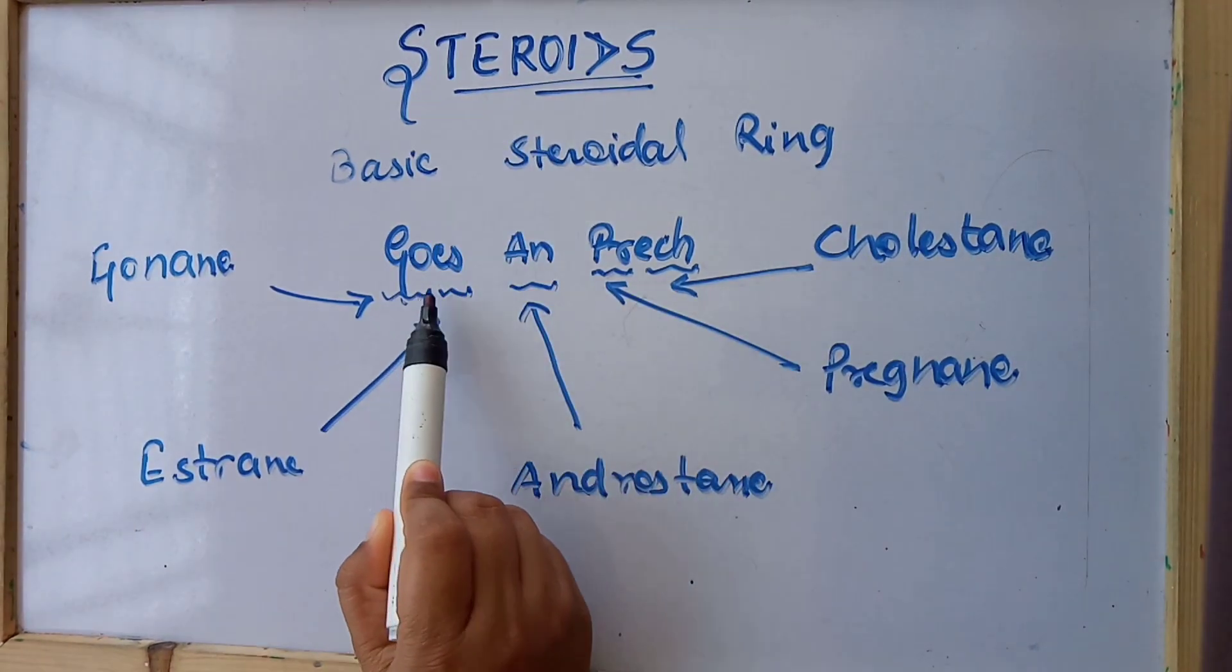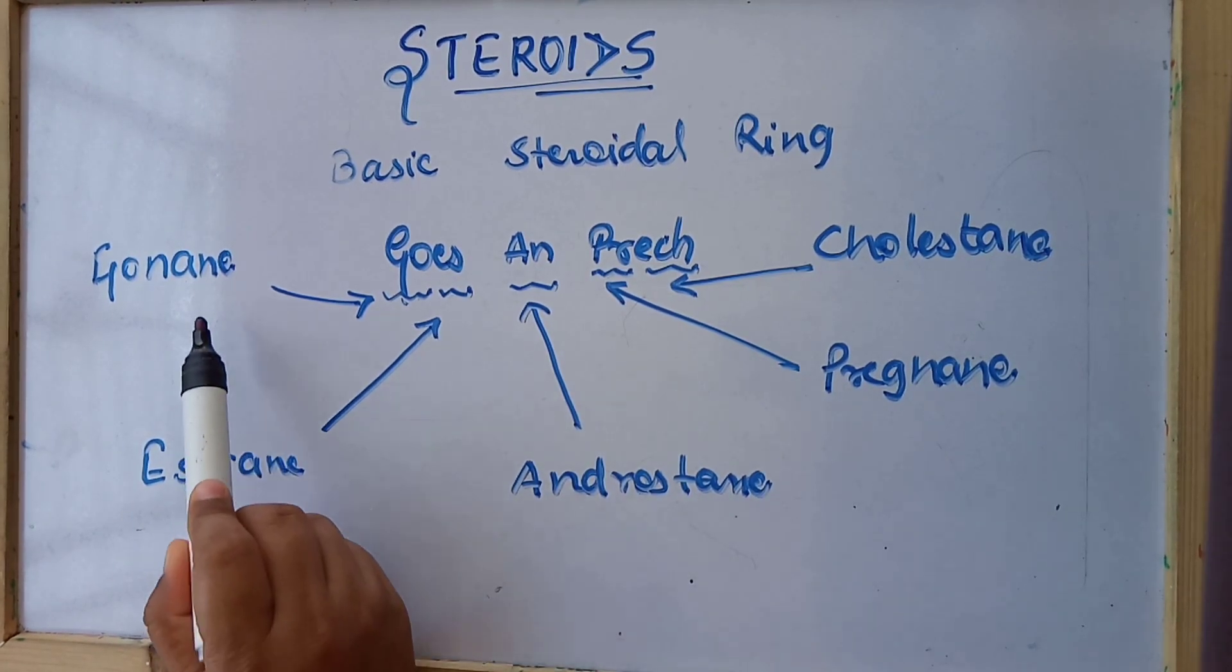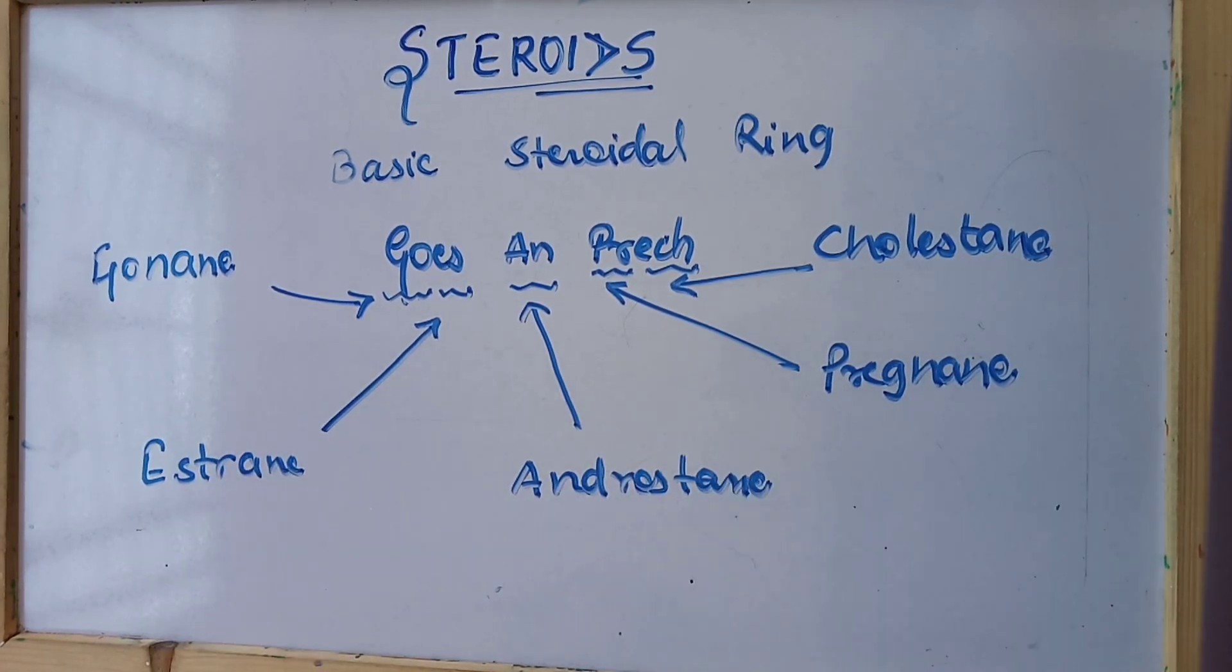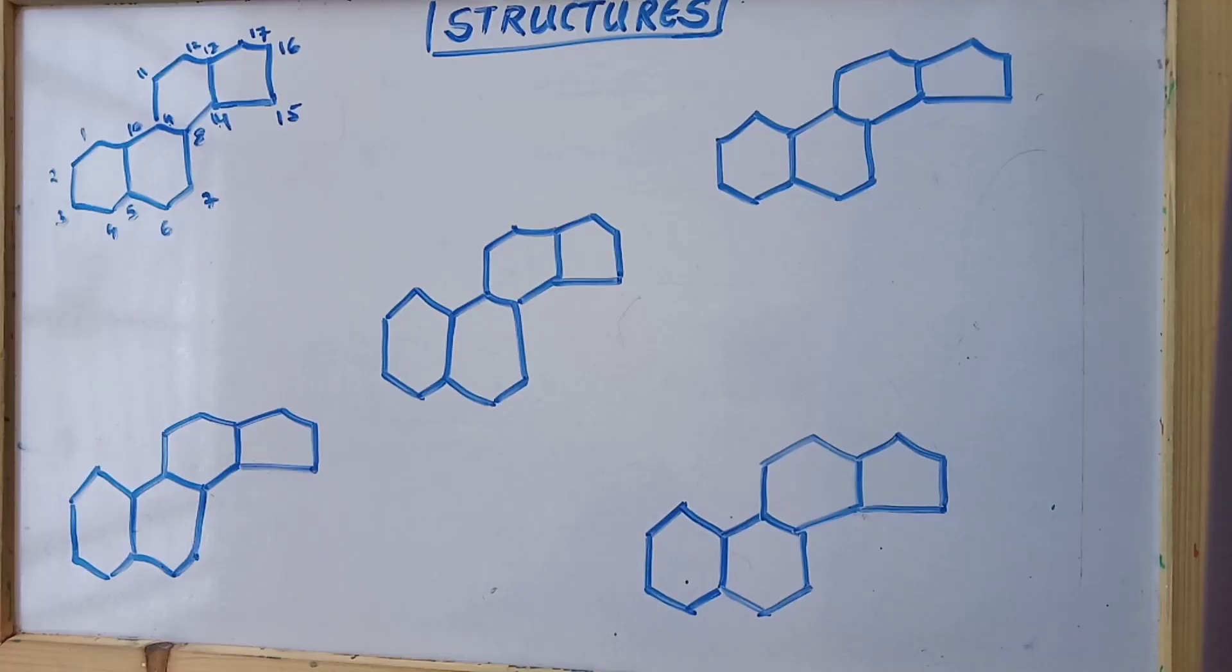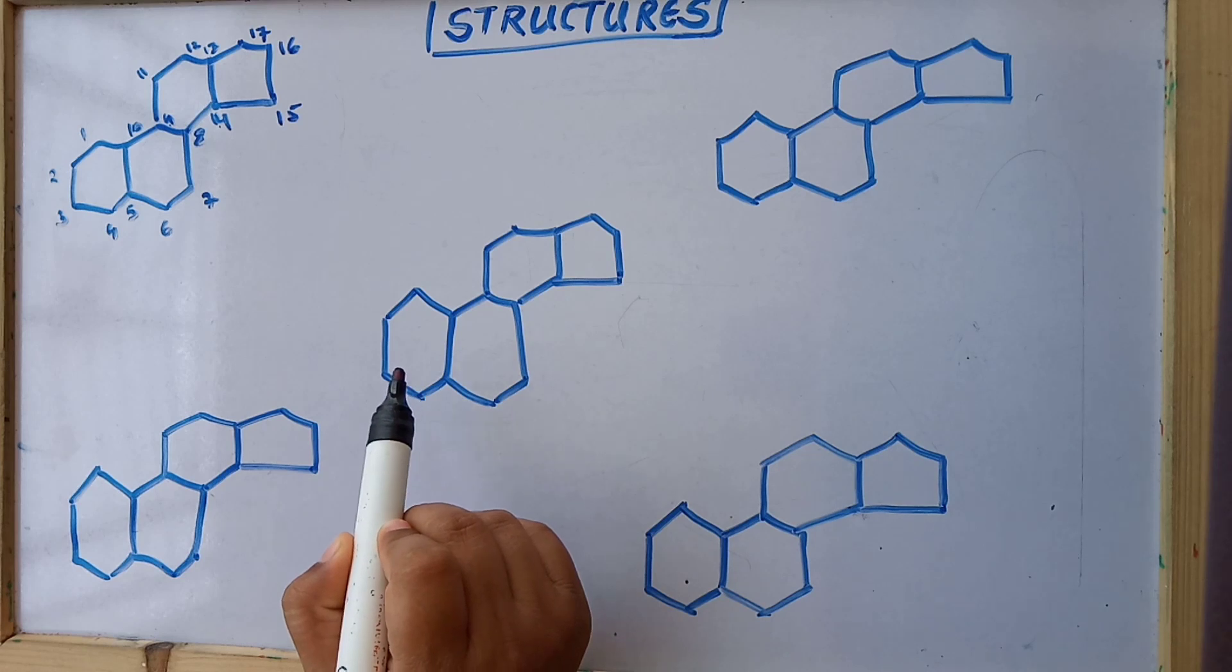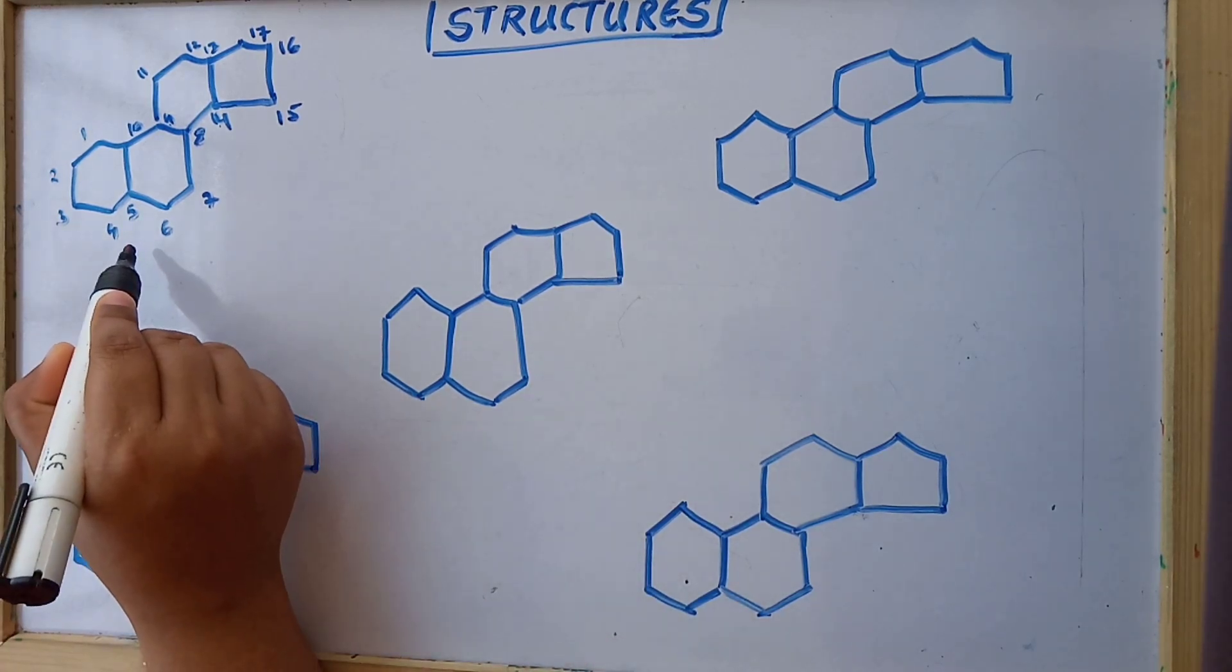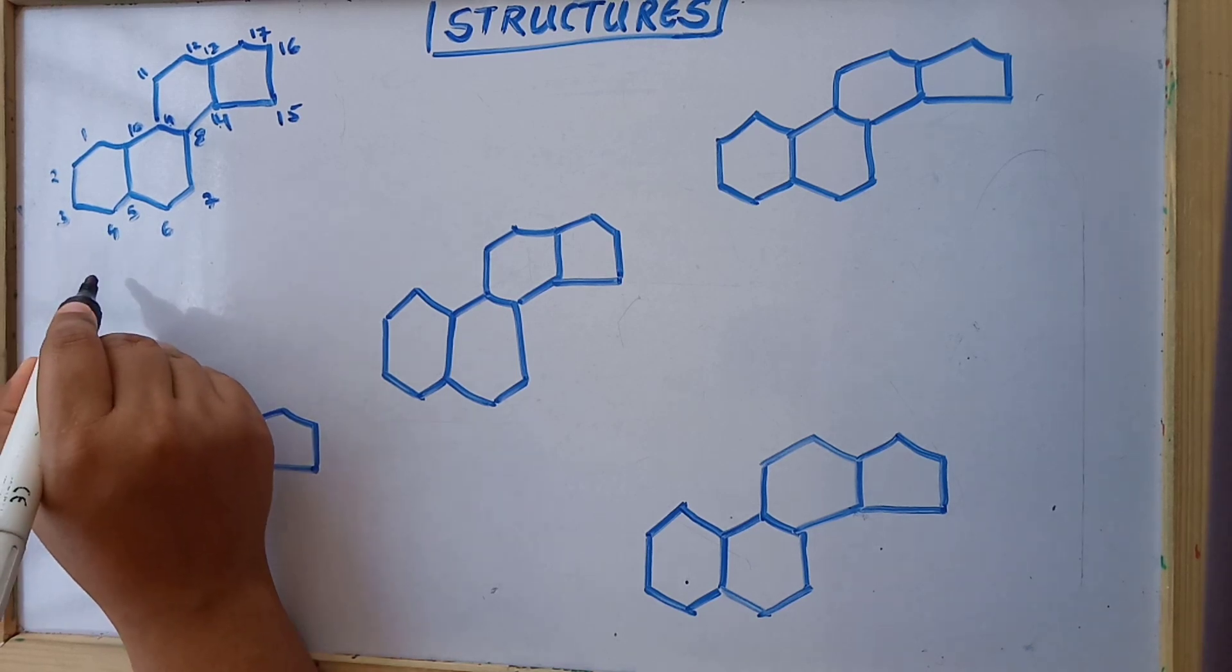So today I'll also tell you the basic steroidal structures. Okay, let's focus on the structures. This is a basic phenanthrene ring and that is the steroidal ring. This normal structure of phenanthrene ring without any double bonds is known as gonane.